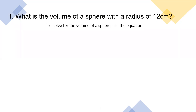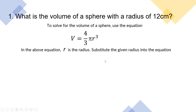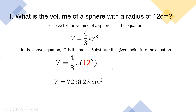Practice problem number one: what is the volume of a sphere with a radius of 12 centimeters? To solve for the volume, use the equation V equals 4 over 3 multiplied by pi multiplied by r cubed. Substitute the given radius into the equation: 4 pi multiplied by 12 cubed over 3. We will get a volume of 7,238.23 cubic centimeters.